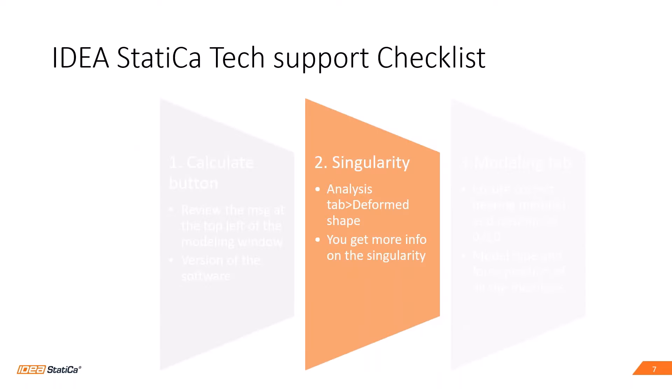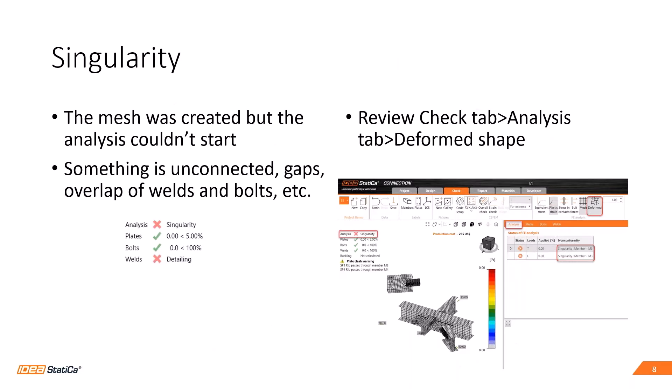The second point of my checklist: when you see the word 'singularity' in the top left of the modeling window, do not panic. The best is to go to the check tab to get more information. A singularity happens when the mesh was created but the analysis couldn't start because one element is not connected well to the joint — there was a gap, or maybe you have overlapping connecting items like bolts and welds in the same position. The objective of this guide is to tell you where to find more information and how to fix it.